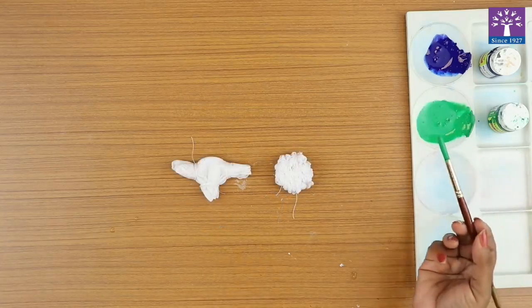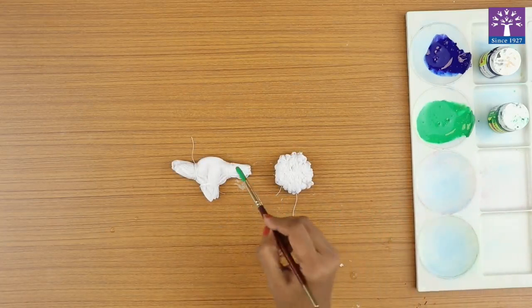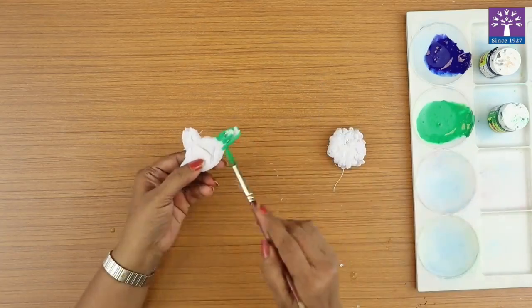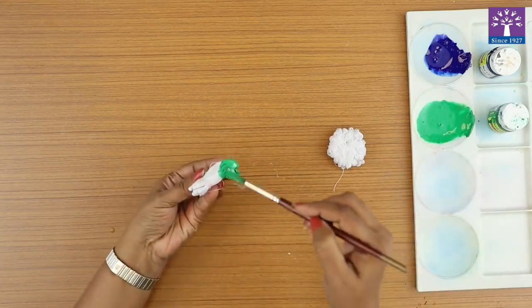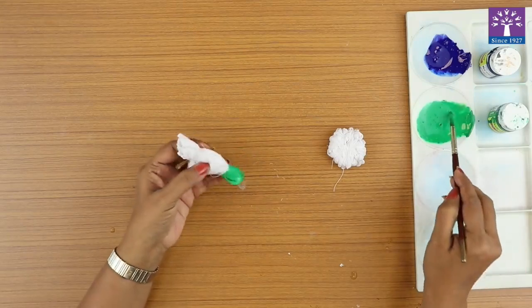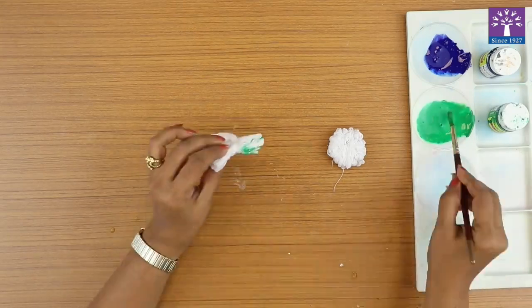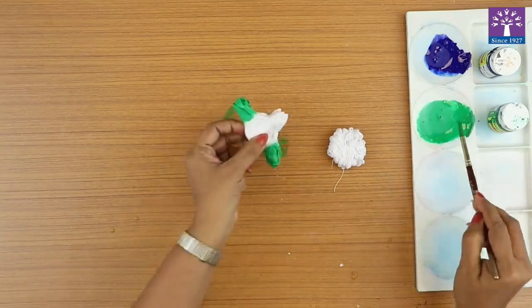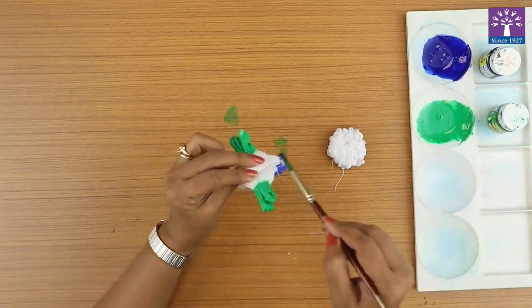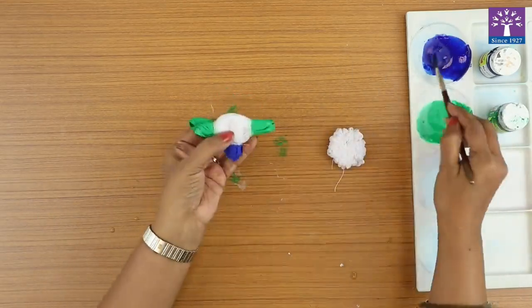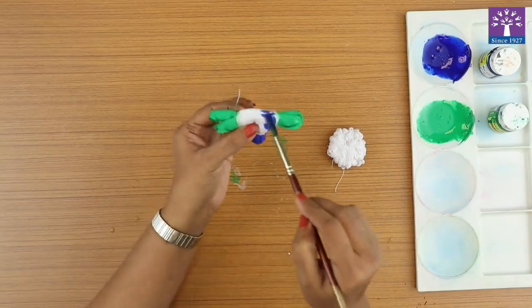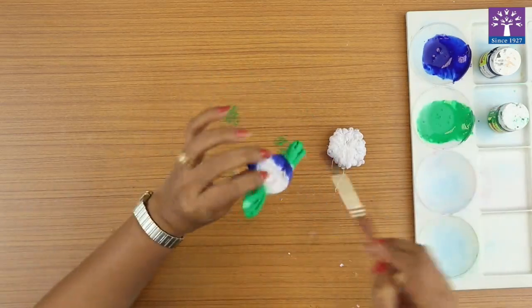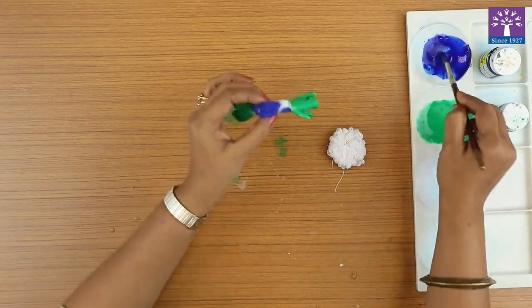What we will do is dip the painting brush in some diluted paint and apply it at the tip around. Since the cloth is wet, the color will automatically get soaked in. I will apply a little bit of green and apply blue color slightly away from the thread side that we have tied.